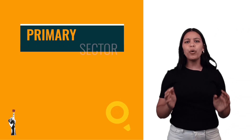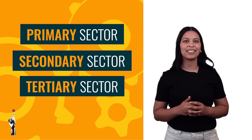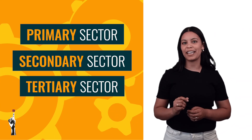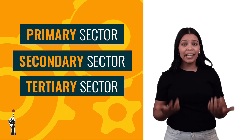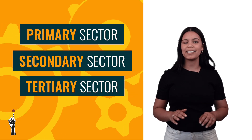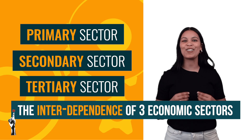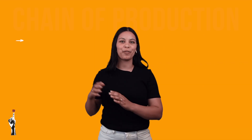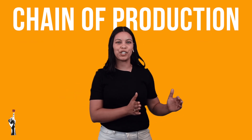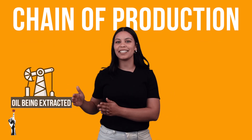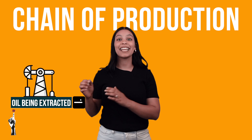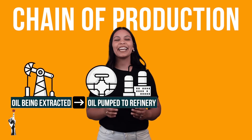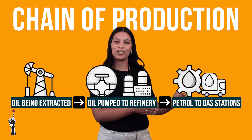I am sure you made your teacher very proud. All three economic sectors we had a look at directly affect each other and are dependent on one another. We call this the interdependence of the three economic sectors. Products move through a chain of production from where it is excavated as a raw material, then manufactured into a finished product that is sold to consumers.